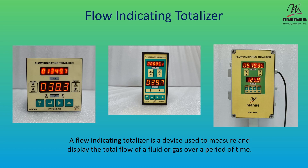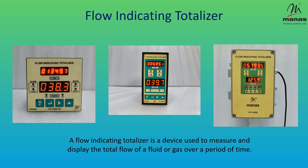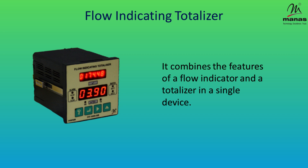A flow indicating totalizer is a device used to measure and display the total flow of a fluid or gas over a period of time. It combines the features of a flow indicator and a totalizer in a single device.